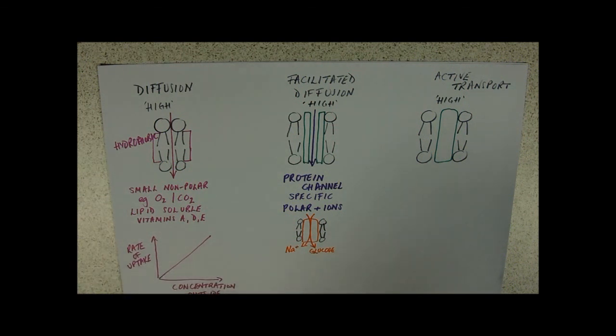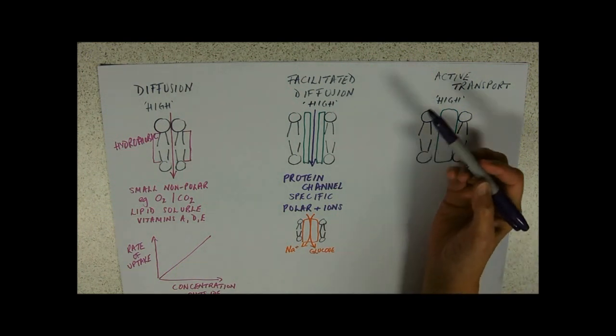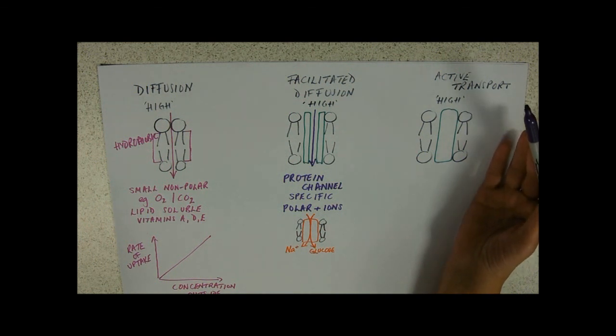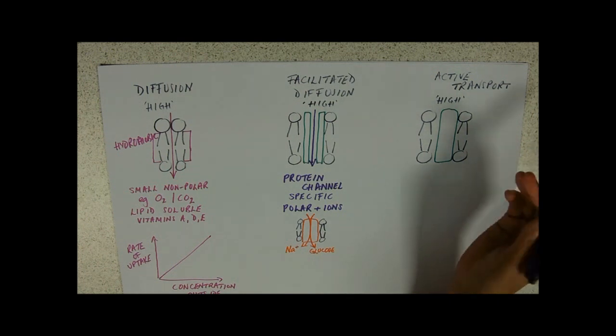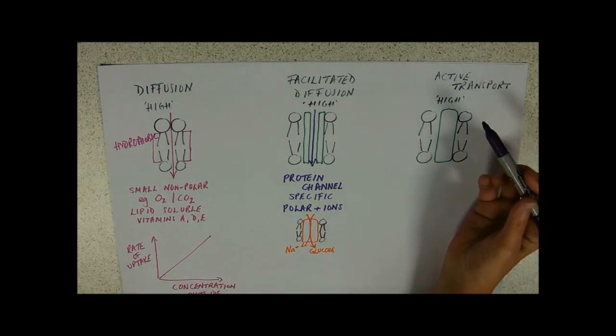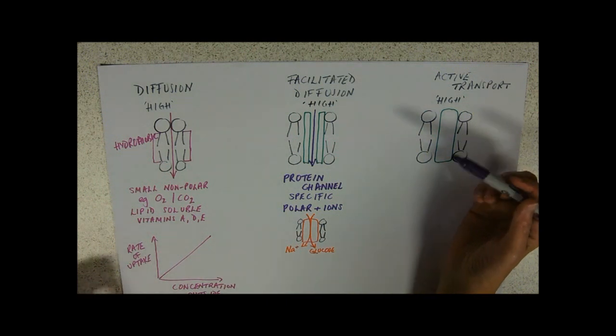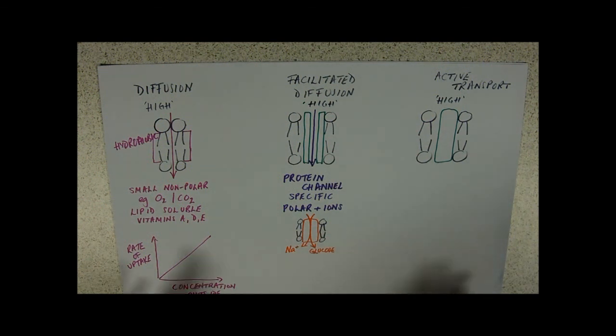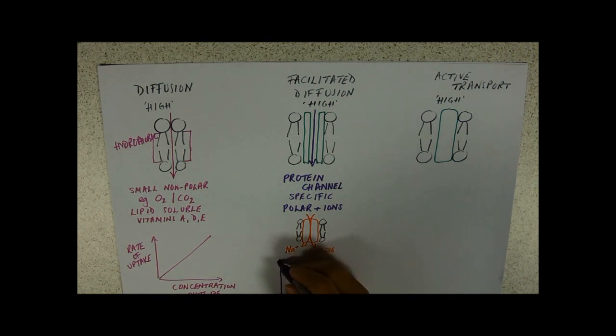So this is also a passive process. We don't need any ATP. So this will happen as long as there's a concentration gradient. Obviously if we raise the temperature, the molecules and ions are going to collide with the channels more frequently and cross. If we raise the concentration gradient, there are going to be more frequent collisions on the high side and they're going to go across more easily. If we've got more surface area to put our protein carriers in, there's going to be more collisions and they're going to go across.